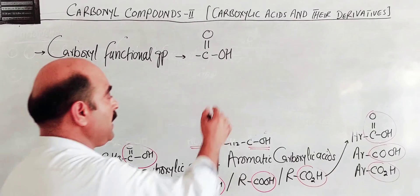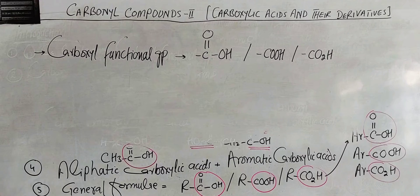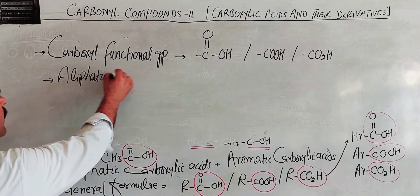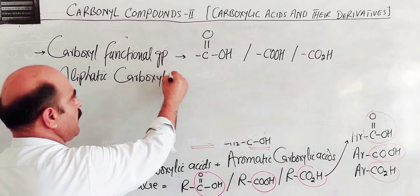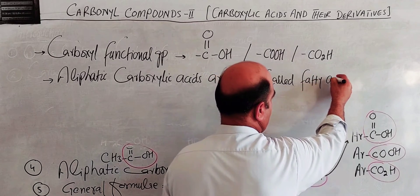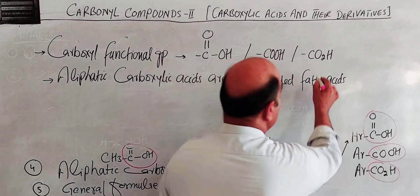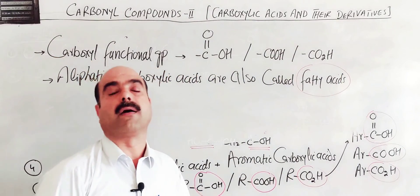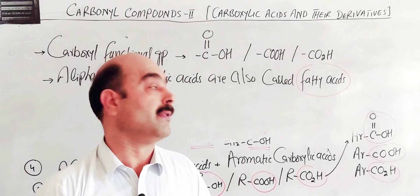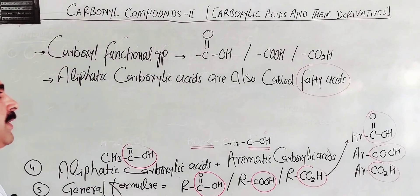The carboxyl functional group is simply written as COOH, and in simplified form as CO2H. Carboxylic acids are also called fatty acids. There are two reasons why carboxylic acids are also called fatty acids.